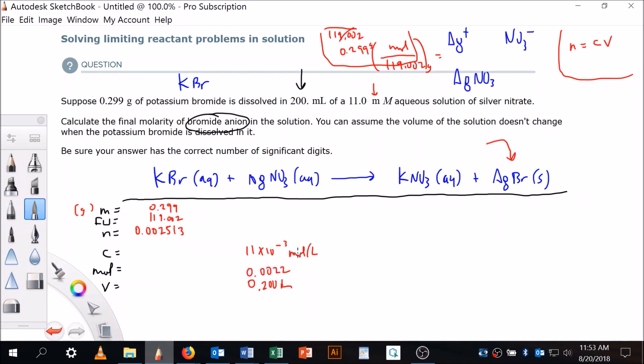Aha, okay, so here's the limiting reactant issue, right? You see I'm gonna get 0.0022 moles of this stuff plus 0.00253 moles of this stuff. How many moles am I gonna get of this stuff? This is the limiting reagent question, right?